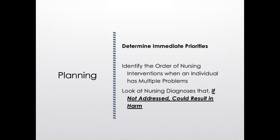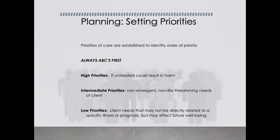Planning and setting priorities: established priorities identify the order of care. Always ABCs first — airway, breathing, circulation. High priorities, if untreated, will result in harm. Immediate priorities are non-emergent, non-life-threatening needs. Low-priority needs may be directly related to the illness or prognosis but affect future well-being.